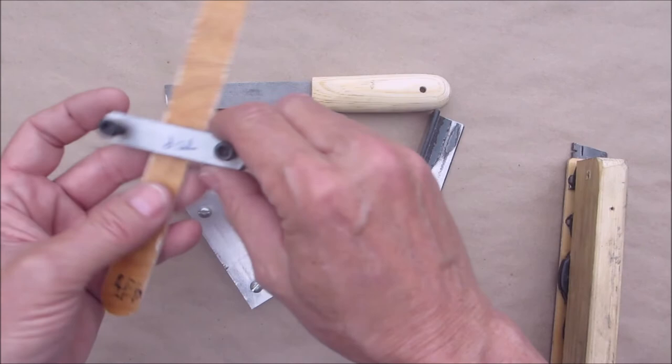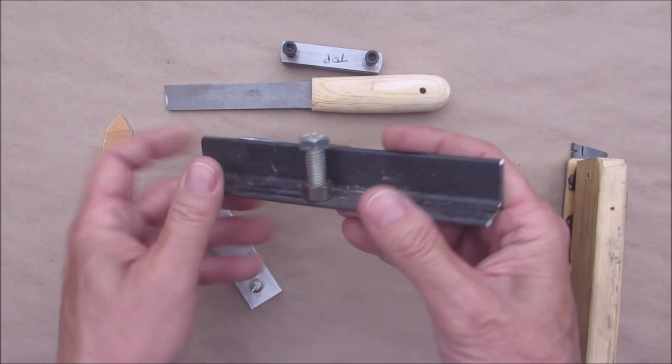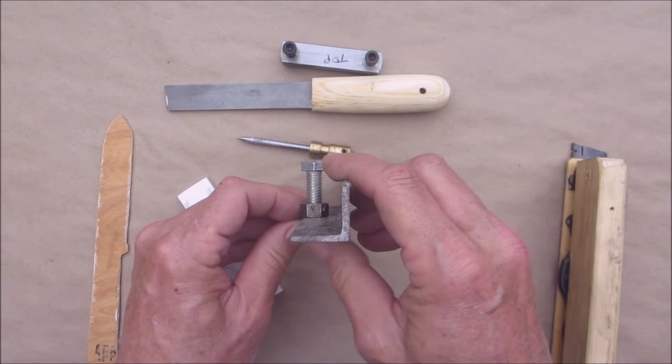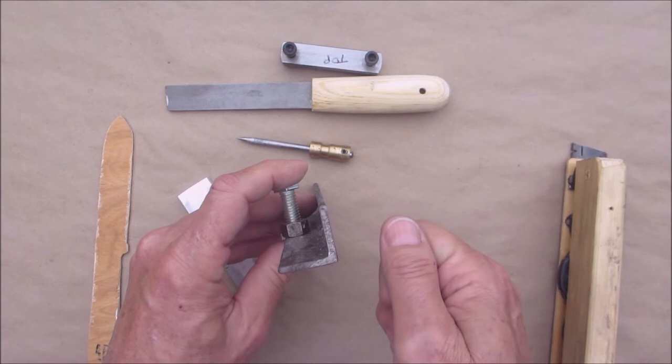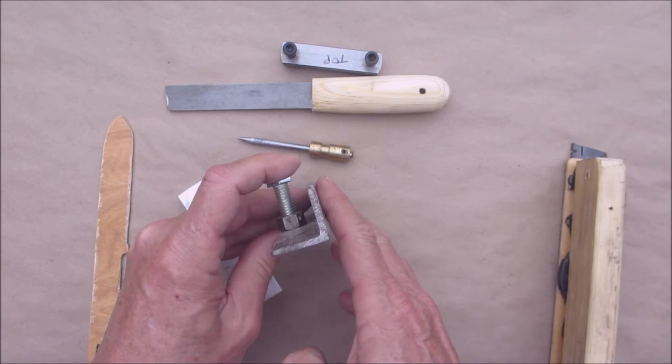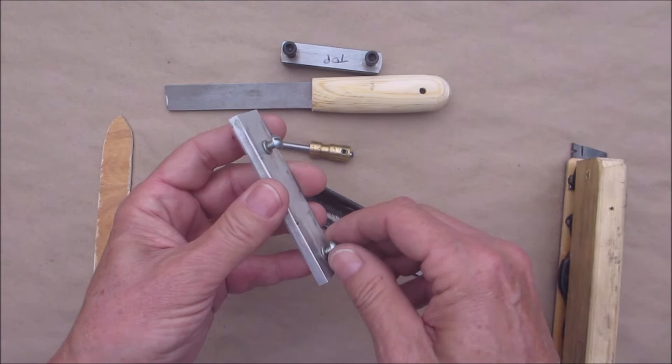So we have that. Then we have this, just a simple angle iron with a fifteen-sixteenths bolt going through it, tapped, so that I could create the angle for putting the grind in, the bevel on the blade, which I'll explain to you in a moment.